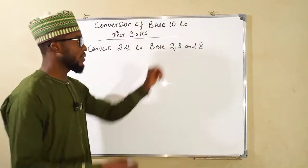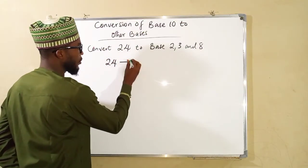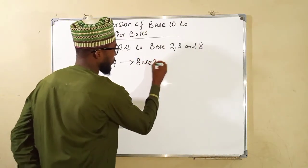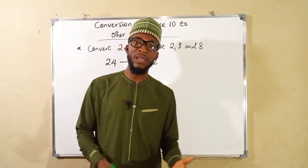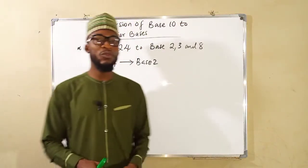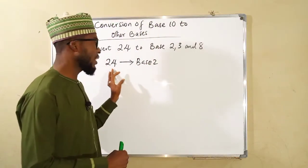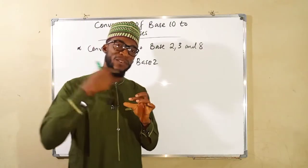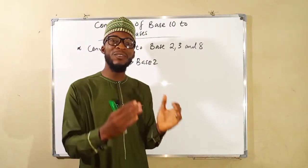Let us start with base 2. We want to convert 24 to base 2. Numbers in base 10 are sometimes referred to as the denary numbers or decimal numbers, while numbers in base 2 are referred to as binary numbers. Now, to convert numbers from base 10 to other bases, you need to perform a successive division of that number using the assigned base and collect the set of remainders in their descending order.